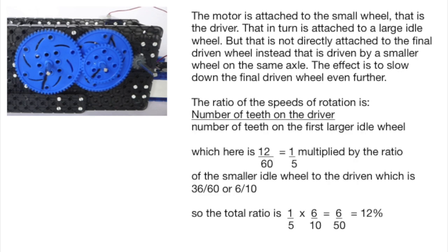To calculate the final speed we need to do a little bit of arithmetic. The ratio of the speeds of rotation from the driver to the idler wheel is 12 teeth to 60. That's a ratio of 1 to 5.